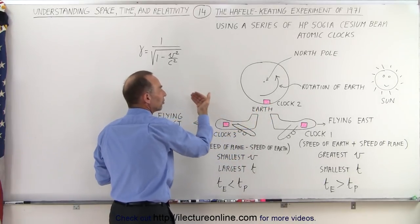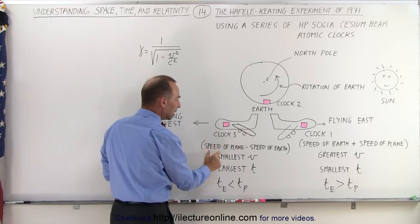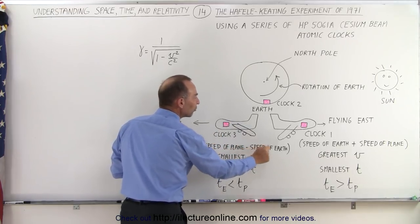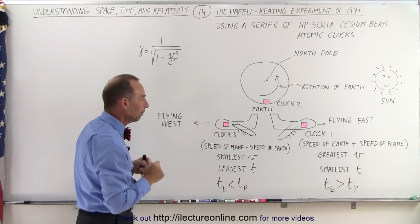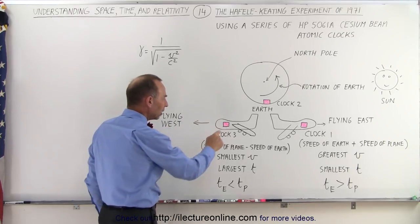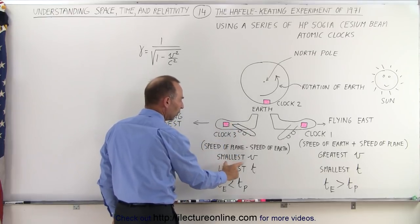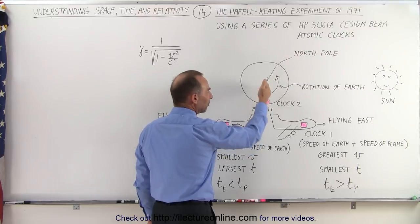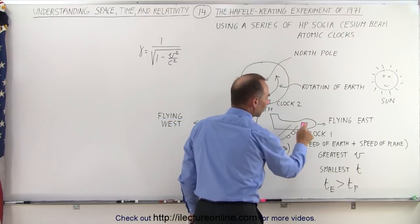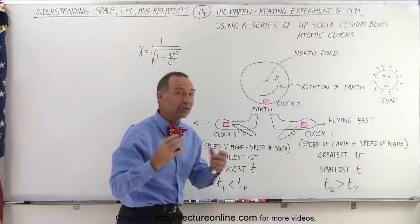Another plane would fly westward, and therefore the speed of the clock would equal the speed of the plane minus the speed of the Earth, so relative to space it would travel slower. The clocks on the plane flying westward would have the smallest velocity. The clocks on Earth would have the middle velocity, and the clocks on the plane flying eastward would have the greatest velocity, all relative to one another.